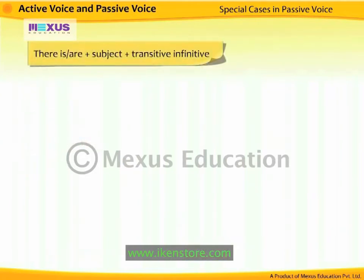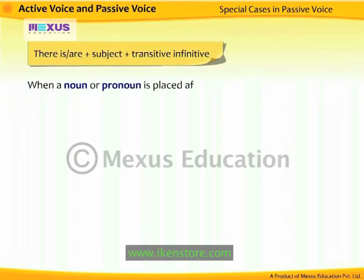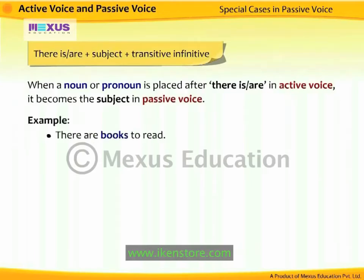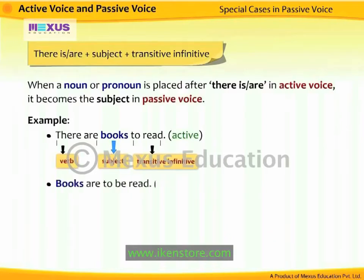'There is / There are + subject + transitive infinitive': when a noun or pronoun is placed after 'there is' or 'there are' in active voice, it becomes the subject in passive voice. For example, 'There are books to read' becomes 'Books are to be read.'